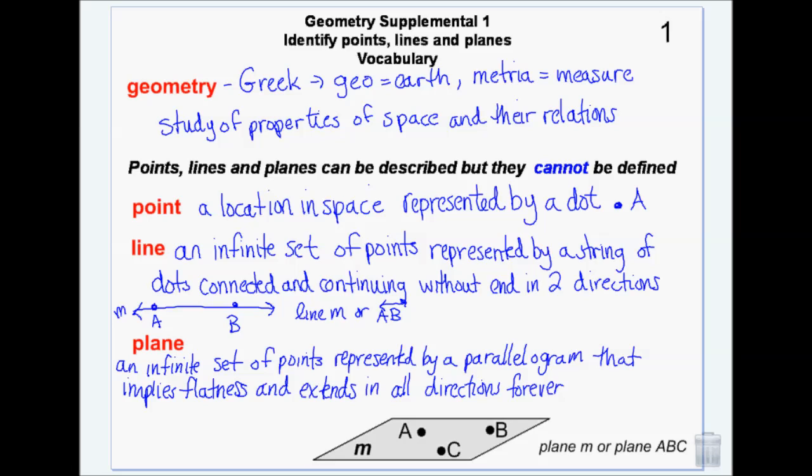When you talk about a point in terms of dimensions — you've heard of 3D movies, right? That's three-dimensional movies. A point has zero dimensions, so 0D.